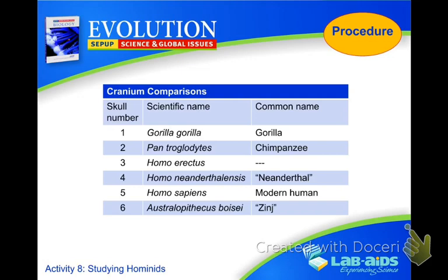Remember, we write scientific names in italics. If you're handwriting, you capitalize the first word and lowercase the second, or underline the scientific name. You can also just write the common names — that's fine. Whichever one makes more sense to you. But why do we use the Latin form instead of just saying gorilla and chimpanzee?